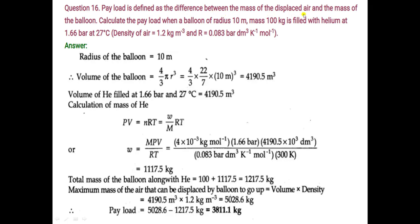Difference between mass of the displaced air and the mass of the balloon. Calculate the payload when a balloon of radius 10 meters, mass 100 kg, is filled with helium at 1.66 bar at 27 degree Celsius. Density of air is given and the value of gas constant is also given.